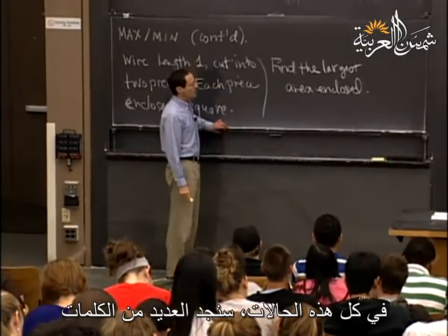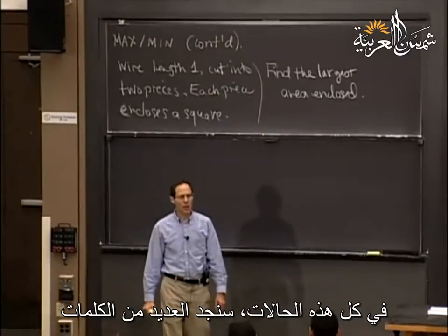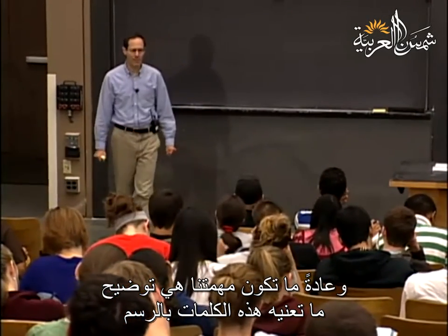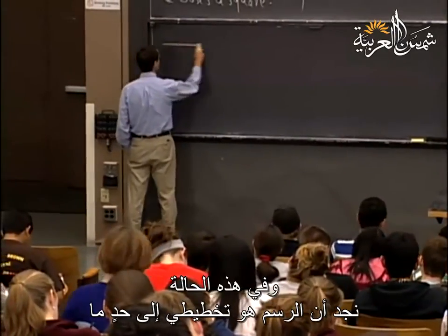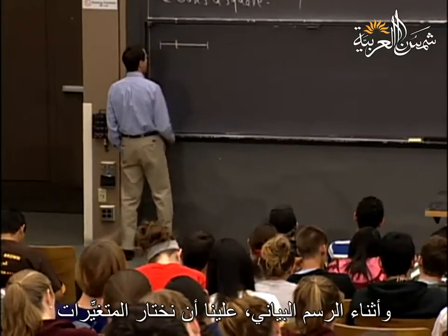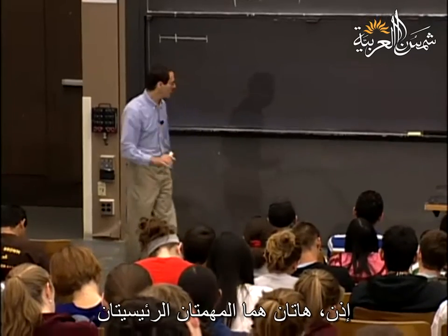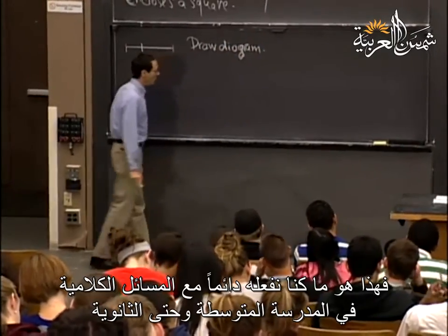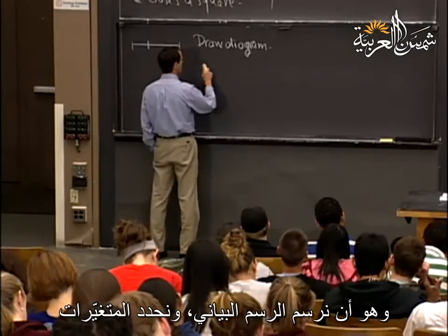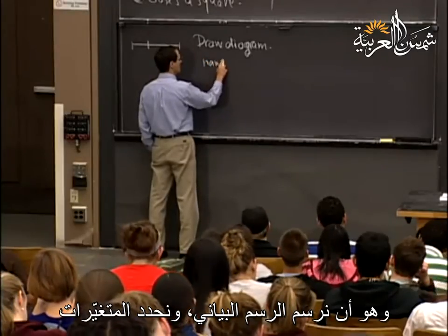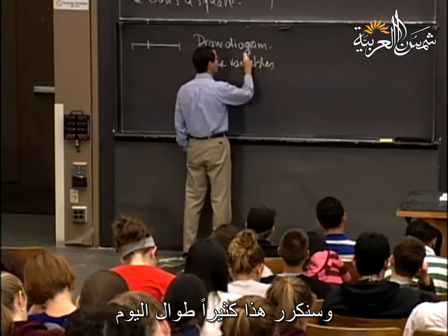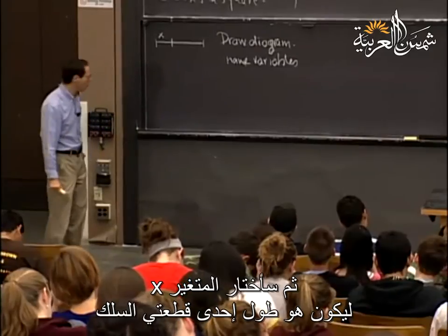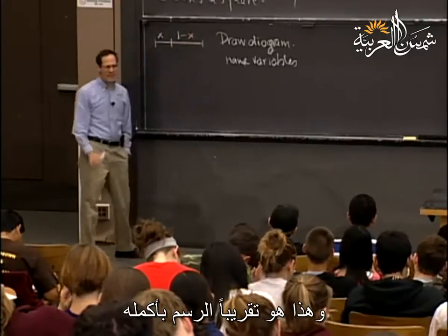In all of these cases, your job is typically to draw a diagram. The first thing you want to do is draw a diagram — it can be fairly schematic. When you draw the diagram, you're going to have to pick variables. Those are the two main tasks to set up the problem: draw a diagram and name the variables. I'm going to choose the variable x to be the length of one of the pieces of wire, which makes the other piece 1−x.